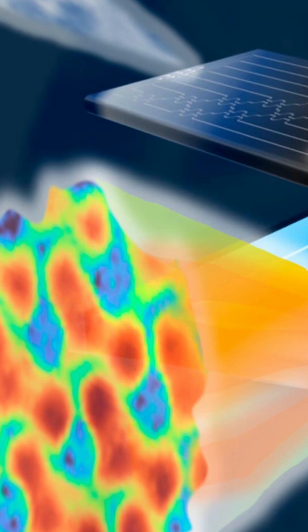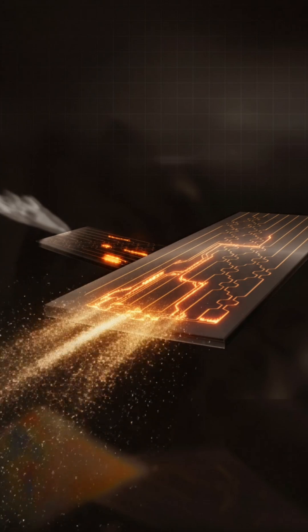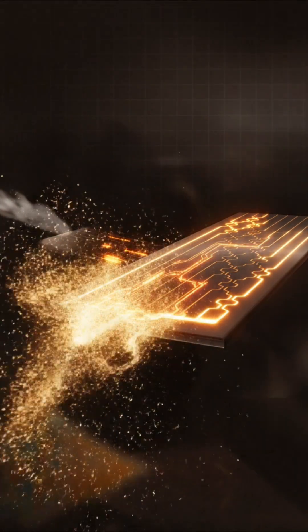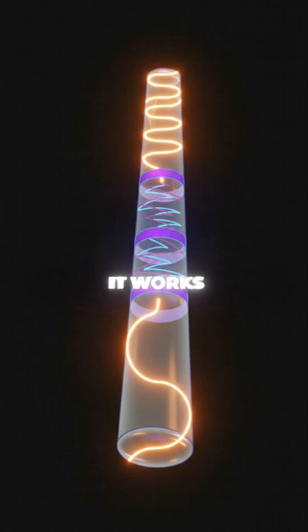The challenge with photonic chips is controlling light. It leaks, it scatters, and it's hard to trap. But gyromorphs can do it.